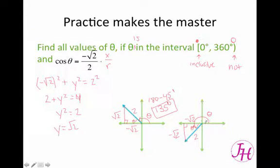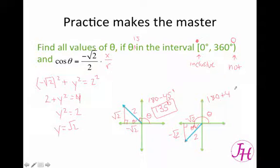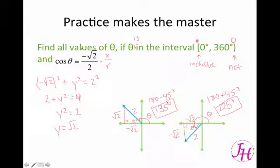For the second answer, remember the reference angle was 45 degrees. So in order to find theta in the third quadrant, we take 180 degrees and add the 45 degrees, because not only did it go to 180 degrees but it kept going 45 more degrees. So our answer is 225 degrees. The two answers that satisfy cosine theta equals negative square root of 2 over 2 are 135 degrees and 225 degrees, because we had to stay within 0 degrees and 360 degrees.